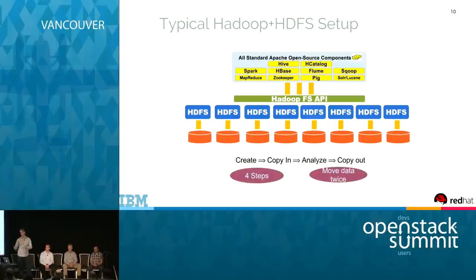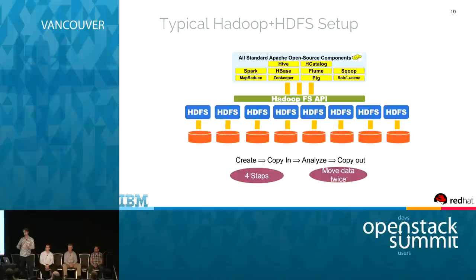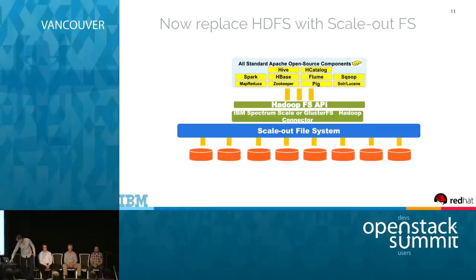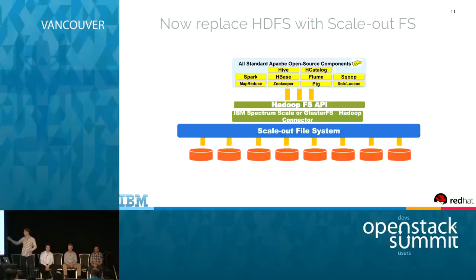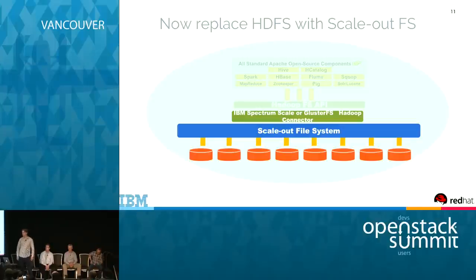In a standard environment, you have a series of HDFS servers with all the data, and analytics applications at the top leveraging the Hadoop file system API. Typically, you're generating data in one system, ingesting it into your analytics system — creating another copy — analyzing the data, creating yet another copy of the result set, and then copying that data out of the cluster. You're creating up to several copies of your data along the process. The goal is to simplify that. The first thing we did was replace the bottom layer with a scale-out file system, installing connectors — either the GlusterFS connector or the IBM Spectrum Scale connector — to run your analytics jobs on the file system.